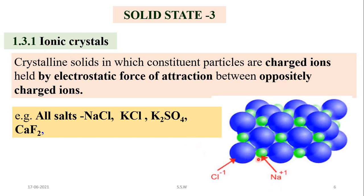In this picture, the small green sphere represents the sodium ion and the large blue-colored sphere represents the chloride ion. There is a force of attraction between these oppositely charged ions. Chloride ion has a larger size whereas sodium ion has a smaller size, and these are alternately arranged in the crystal.